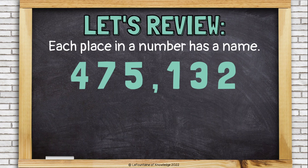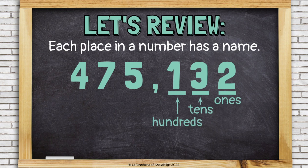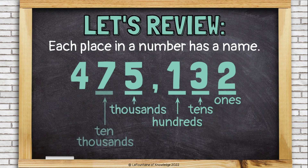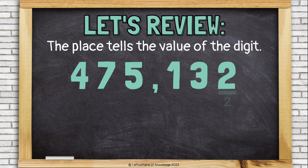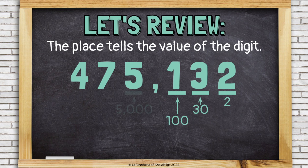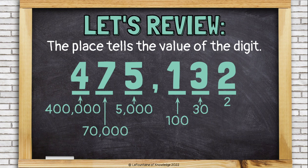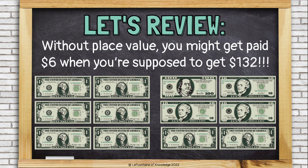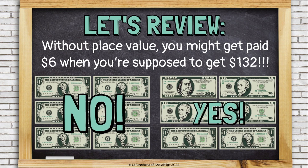Let's review. Each place in a number has a name: ones, tens, hundreds, thousands, ten thousands, hundred thousands. The place tells us the value of the digit. The two is worth two. The three is worth 30. The one is worth 100. The five is worth 5,000. The seven is worth 70,000. And the four is worth 400,000. Without place value, you might get paid six dollars when you're supposed to get 132 dollars.